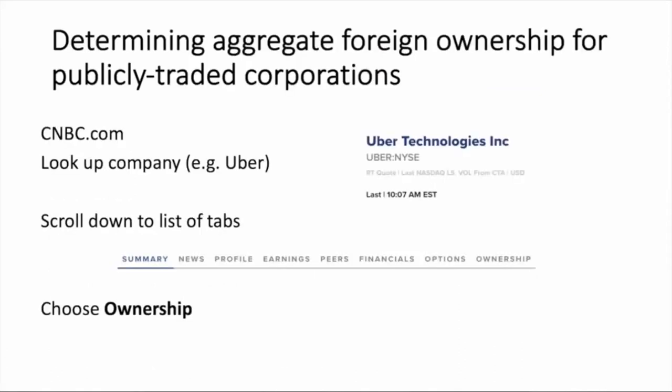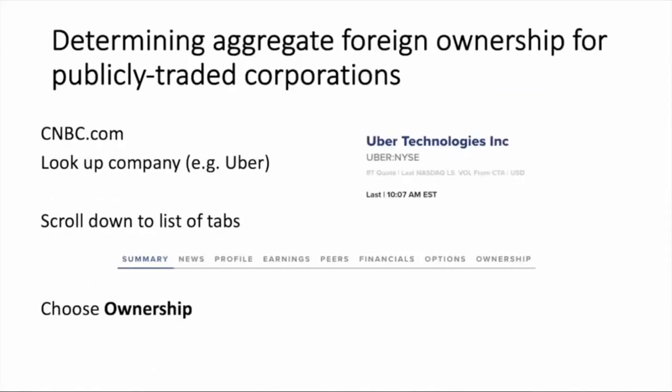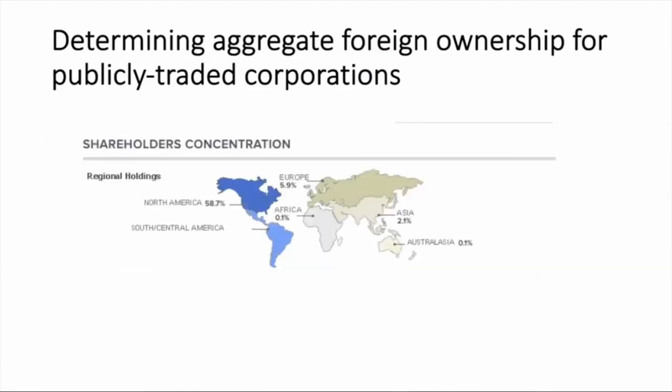Then I'll talk about how you can know if an investor is foreign, and finally I'll talk briefly about privately held companies. So the first thing we're going to do is determine aggregate foreign ownership. For example, if we wanted to do this for Uber, we would go to CNBC.com, look up Uber on its stock ticker, scroll down to the tabs — summary, news, profile, earnings, peers, financials, options, ownership — and choose 'Ownership.'